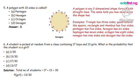Number 5: A polygon with 10 sides is called what? The correct answer is option D, which is decagon.